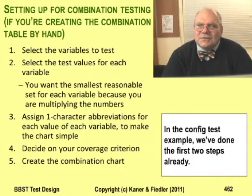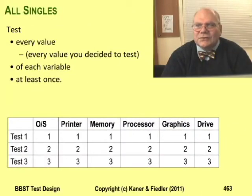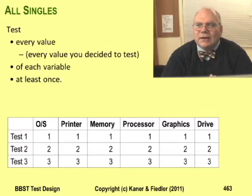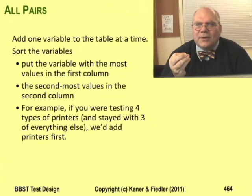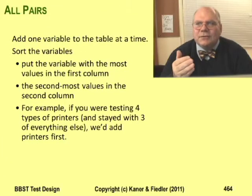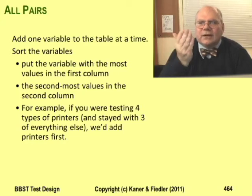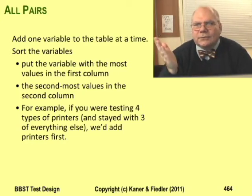The next step is to decide what coverage criterion to use. I'm going to start with all singles. Each variable has three values, so you can cover all the values of all the variables in three tests. Building an all-pairs table takes more work. I do it incrementally — I pair up two variables, then I add a third, and then a fourth, until I run out of variables.